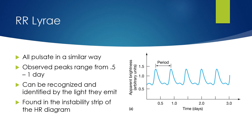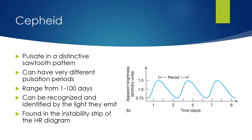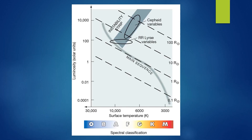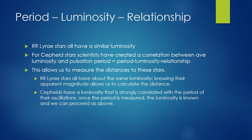RR Lyrae variation makes essentially a shark teeth pattern. Cepheids pulsate in a distinctive sawtooth pattern, with pulsation periods varying from 1 to 100 days — they are also found in the instability strip of the HR diagram. The variability of these stars comes from a dynamic balance between gravity and pressure, with large oscillations around stability. Cepheids that vary slowly over long periods have high luminosities, while those with short periods have low luminosities. RR Lyrae stars all have a similar luminosity compared to Cepheids. For Cepheid stars, scientists have created a correlation between average luminosity and pulsation period — the period-luminosity relationship — which allows us to measure distances to these stars.